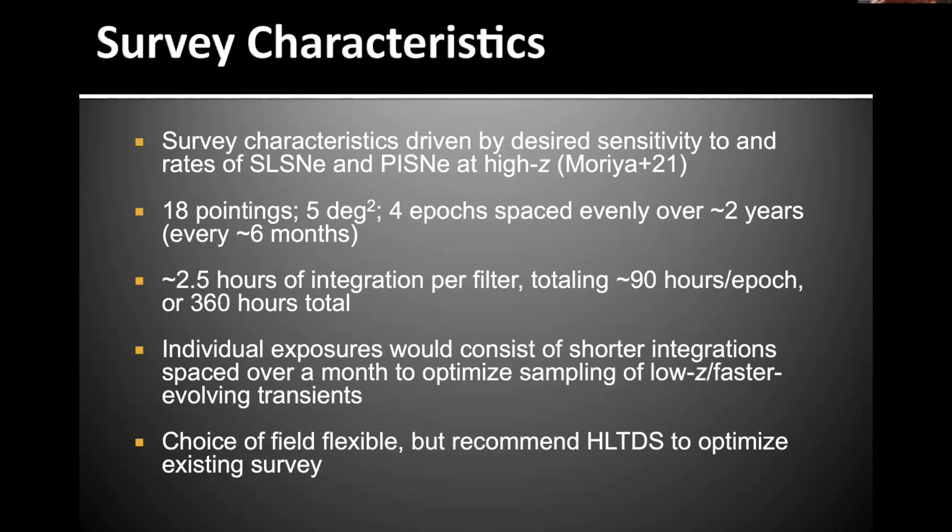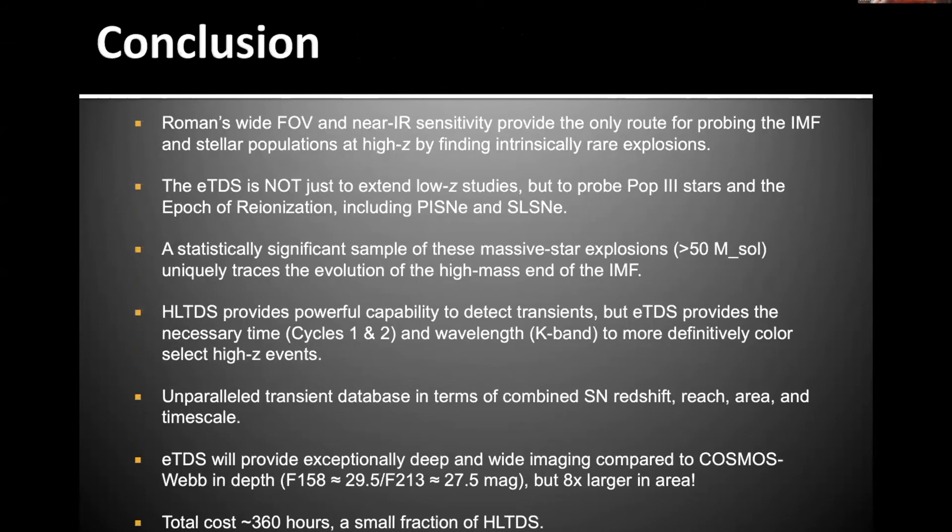The survey itself has 18 pointings, five square degrees, four epochs spaced over two years every six months. You need about two and a half hours of integration per filter, totaling about 90 hours per epoch, or 360 hours total. You also get your individual exposures or epochs would consist of shorter integration spaced over a month to optimize low Z sampling and faster evolving transients. And your choice of field is flexible, but we recommend the high latitude time domain survey for pretty obvious reasons.